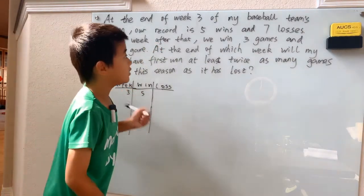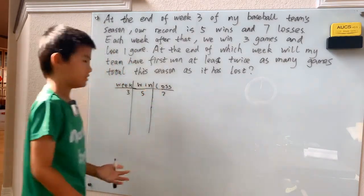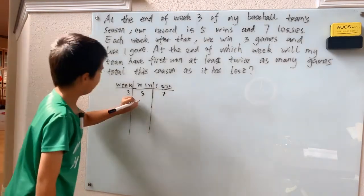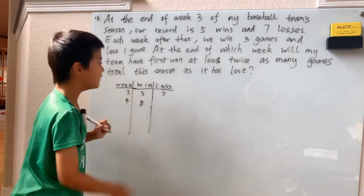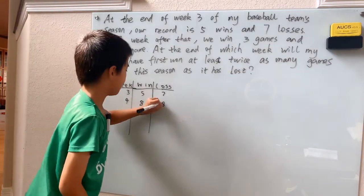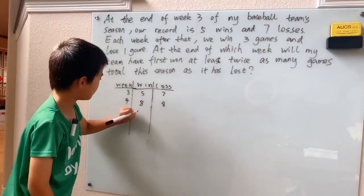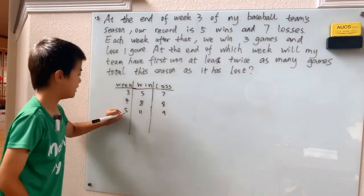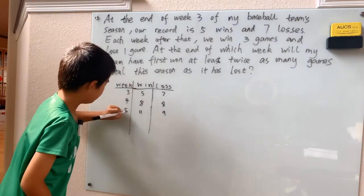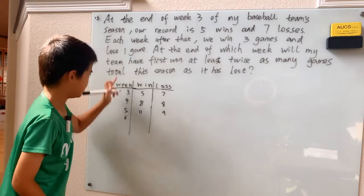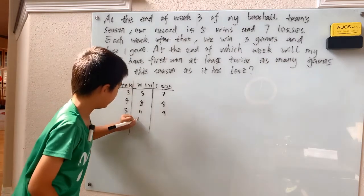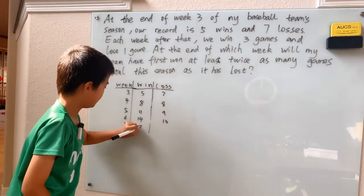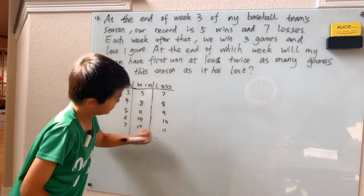We're given that at the end of week three we won five games and lost seven games. Going to week four, we take the number of wins and add three, and take the number of losses and add one. We keep going with this process, adding three to wins and adding one to losses each week.